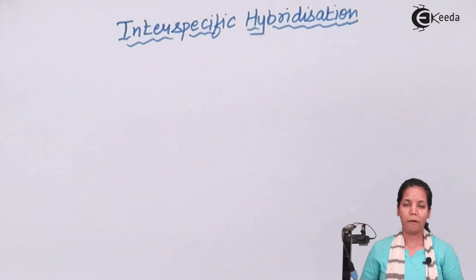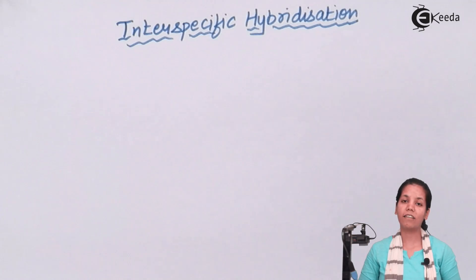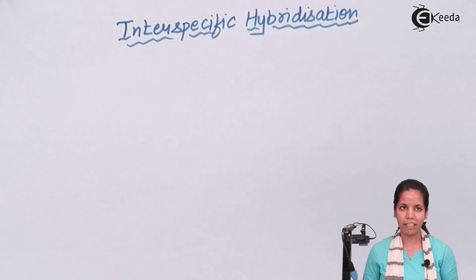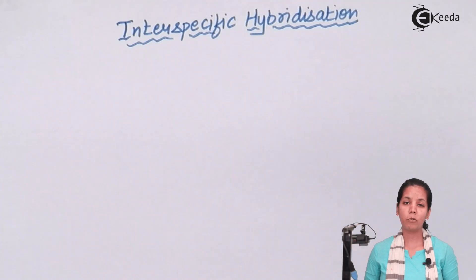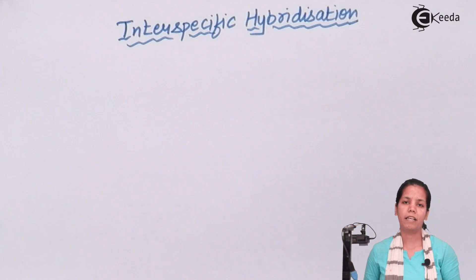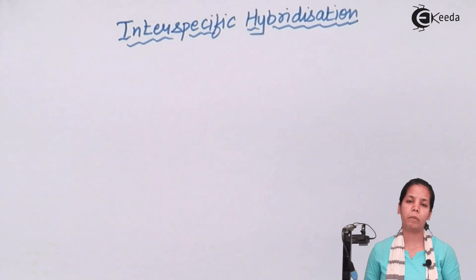In inter-specific hybridization, a superior male with great qualities in terms of productivity and male production is used. Also a female which is superior in that particular breed is used. The process begins with semen being collected from the male counterpart — this semen is always collected from the superior male.